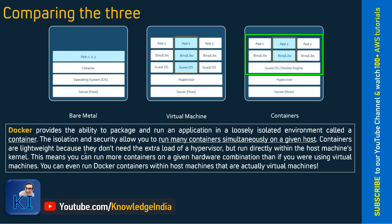Containers are lightweight because they don't need the extra load of a hypervisor, but run directly with the host machine's kernel. Here the host is being referred to as your EC2 instance. This means you can run more containers on a given hardware combination than if you were using virtual machines. That's where containers are becoming popular.